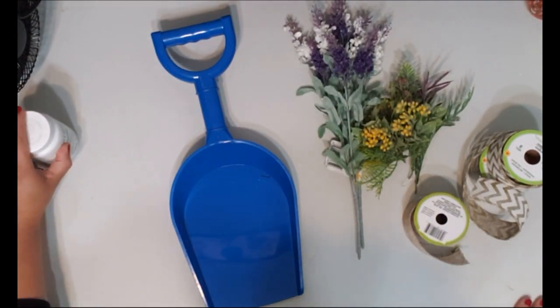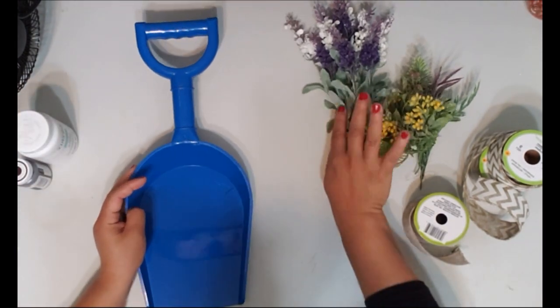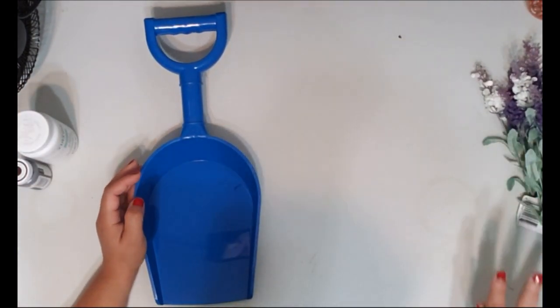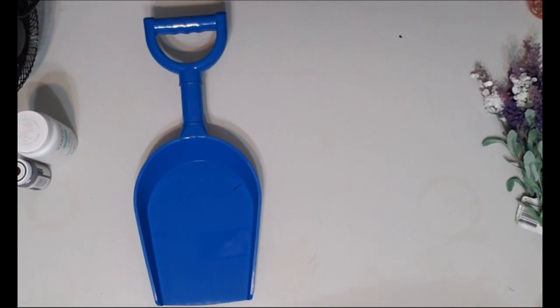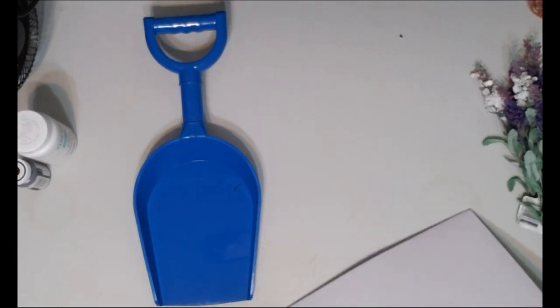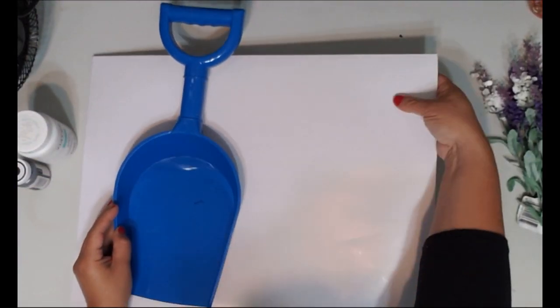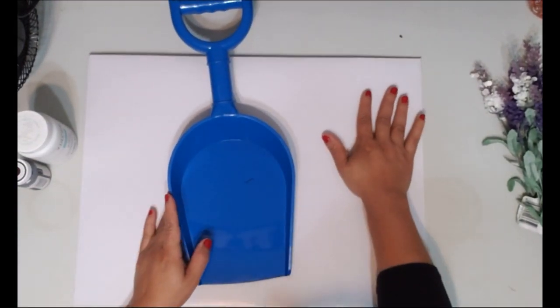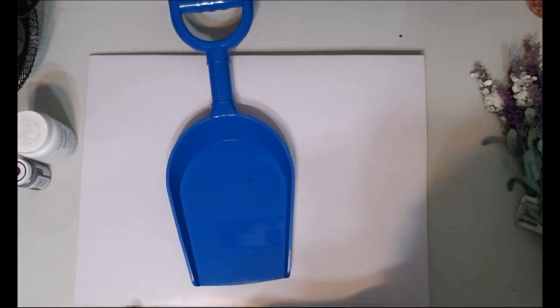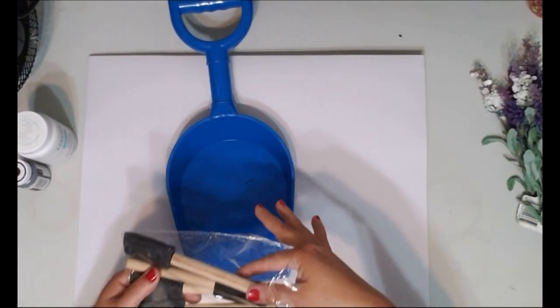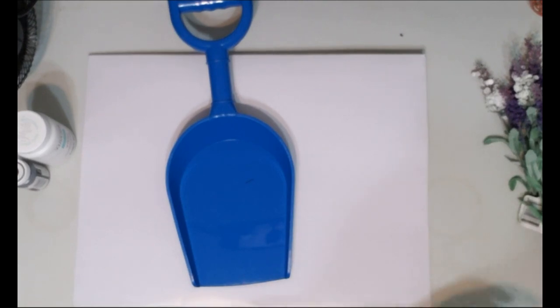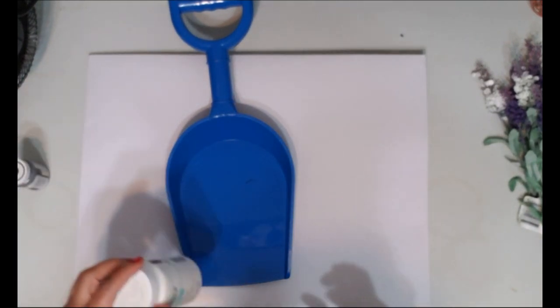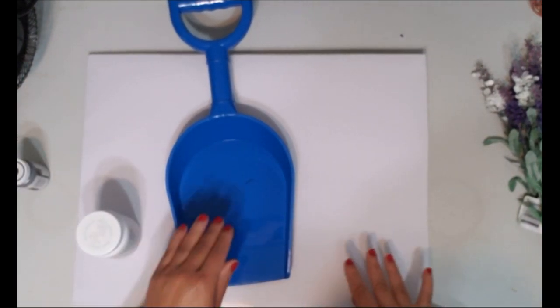What we're going to start off with is painting the shovel, so I'm going to push everything off to the side. I really like to put a piece of cardboard under anything that I paint so that I don't paint my table. You'll need a foam brush from the Dollar Tree and we're just going to foam brush this in. I'm going to go ahead and paint this and I'll be right back.